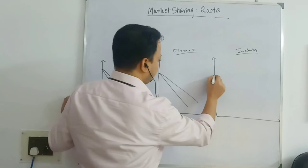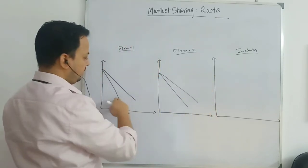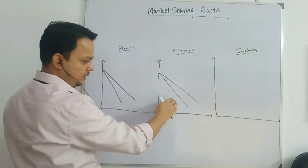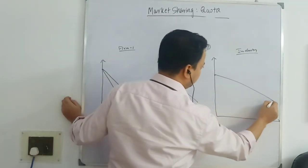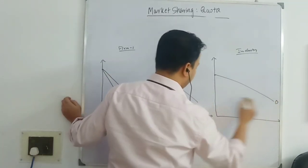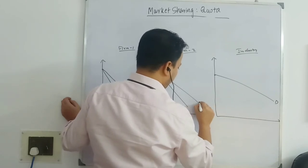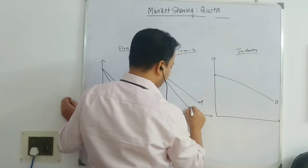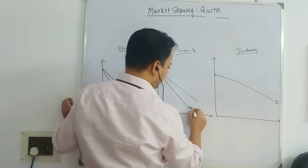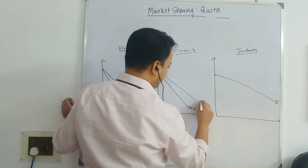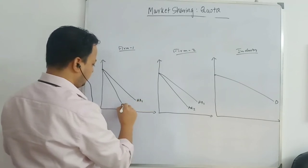For the industry, the intercept will be here but it will be flatter than the individual firm curves. The first step: this is the industry, this is the market demand for firm one with its AR1 and MR1 curves, and similarly AR2 and MR2 for firm two.